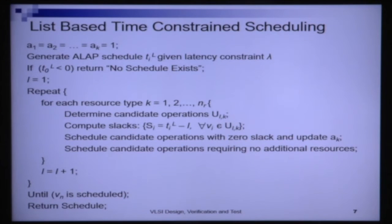Hello, welcome to module 2 of lecture 5. In the last module, we looked at time constraint scheduling and optimal algorithms for doing time constraint scheduling. In this module, we will look at heuristic strategies for doing time constraint scheduling. To reiterate: the problem of time constraint scheduling is scheduling the operations in an operation constraints graph within a given time bound latency known as lambda using the minimum area.